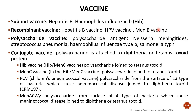In recombinant vaccine preparation, we use recombinant DNA technology to replicate the antigen-coding gene, rather than cultivating whole microorganisms. Polysaccharide vaccines use polysaccharide antigens; examples include Neisseria meningitidis, Streptococcus pneumoniae, Haemophilus influenzae type B, and Salmonella type E. For conjugate vaccines, the polysaccharide is attached to a carrier protein such as tetanus toxoid. Examples include Hib vaccine, meningococcal C vaccine, pneumococcal vaccine for children, and MENACWY polysaccharide vaccine.